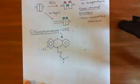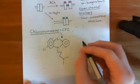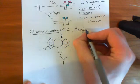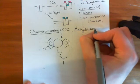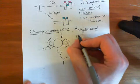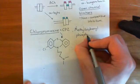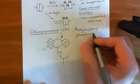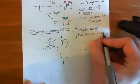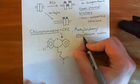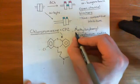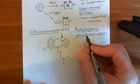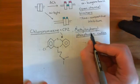The next open channel blocker is a drug known as methyl triphenylphosphonium. This is an ion, so it will need a counter ion - for example, methyl triphenylphosphonium bromide. The pharmacologically active portion is the methyl triphenylphosphonium cation. The structure has a phosphorus atom at the center - that's the phosphonium in the name - with a methyl group coming off it, and then triphenyl means three benzene rings coming off the phosphorus atom.